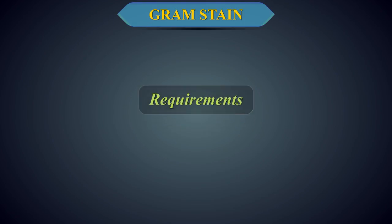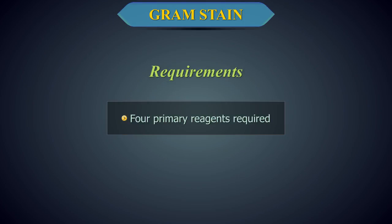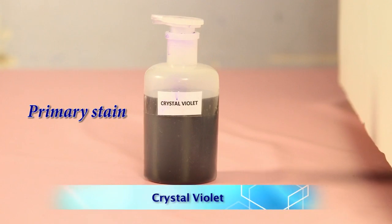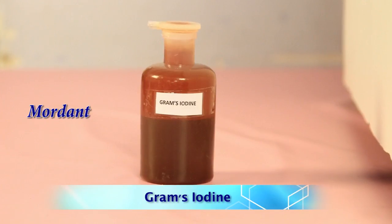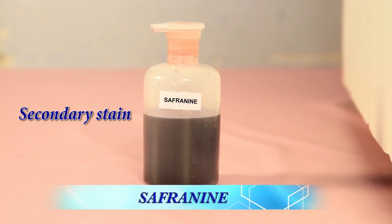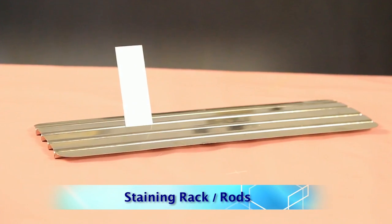Requirements. The four primary reagents required for performing Gram staining are: crystal violet which acts as the primary stain, Gram's iodine which acts as the mordant, 95% ethyl alcohol or acetone which acts as a decolorizer, and safranin which is the secondary stain or the counter stain. Staining rack or rods.